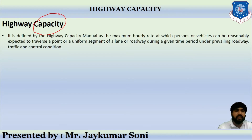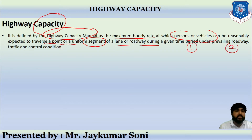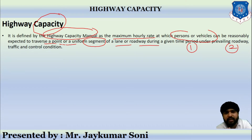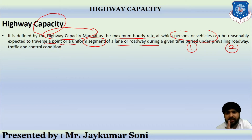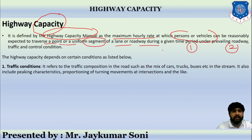The second definition is highway capacity, as defined by the Highway Capacity Manual (HCM). Highway capacity is the maximum hourly rate at which persons or vehicles can be reasonably expected to traverse a particular point or uniform segment of a lane or roadway during a given time period, under the prevailing roadway, traffic, and control conditions.